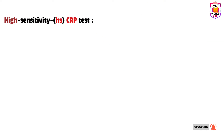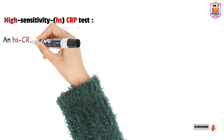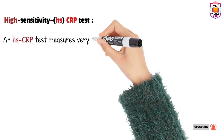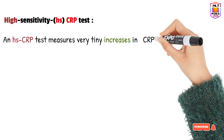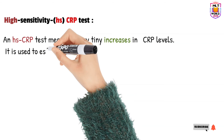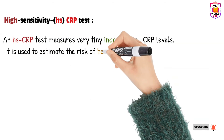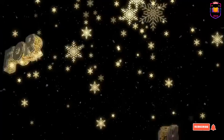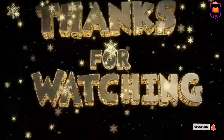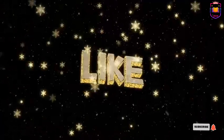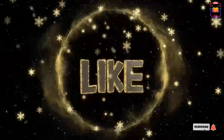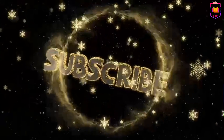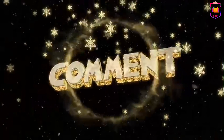Finally, it is important to understand the high-sensitivity CRP, or HS-CRP test. The CRP test is sometimes confused with the high-sensitivity CRP test. They both measure CRP but are used for different conditions. The HS-CRP test measures very tiny increases in CRP level and is used specifically to estimate the risk of heart disease. I hope you now understand the concept of the CRP test — what it is and why we need it. Thank you so much.